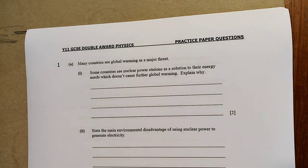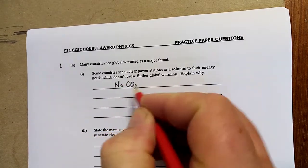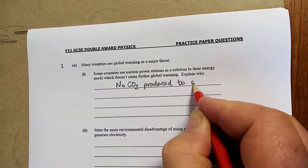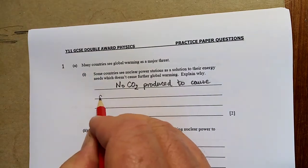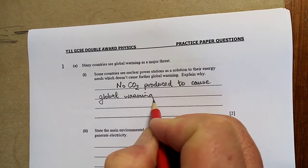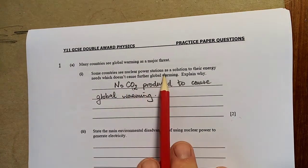Many countries see global warming as a major threat. Well, there are two gases: CO2 and CH4 methane. Some countries see nuclear power stations as a solution to their energy needs, which does not cause further global warming. Explain why. Well, there is no CO2 produced to cause global warming.